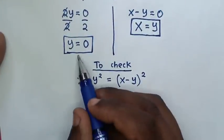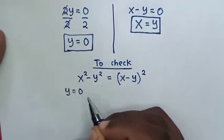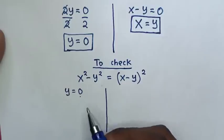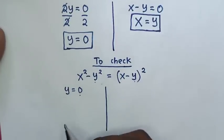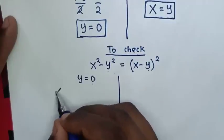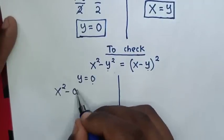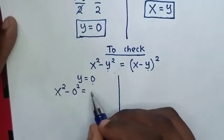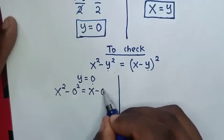Now, to check for the value of y equal to 0, we substitute the value of y, which is 0, into the equation. Our equation will be x squared minus 0 squared is equal to x minus 0, then bracket squared.